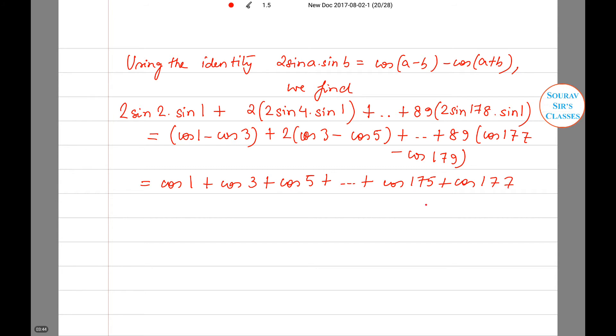This simplifies to cos 1° + 89 cos 1°, which equals 90 cos 1°. So the proof is complete.